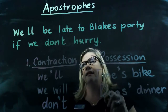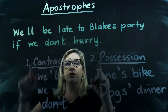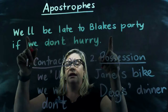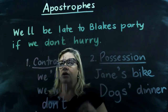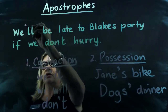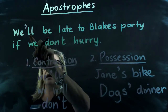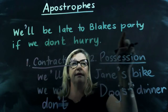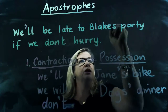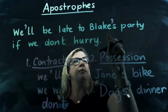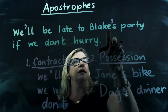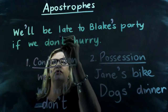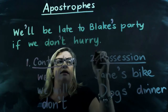Let's look at the sentence I've got up here — we're using both kinds of apostrophes in the one sentence. 'We'll be late to Blake's party, if we don't hurry.' 'We'll' needs an apostrophe between the W and the double L. 'Blake's' shows possession with an apostrophe S. And 'don't' uses an apostrophe where the O was removed.